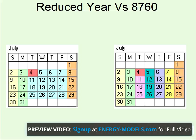Up until now, we've been talking about the Trace 700 simulation as if it was calculating every day of the year separately. And while Trace can do that, that is not what happens by default. Using default Trace data, you are actually calculating using a reduced year sequence of day types.